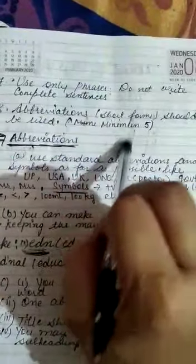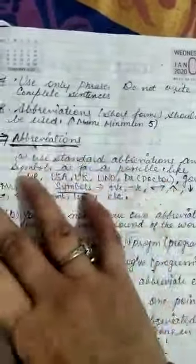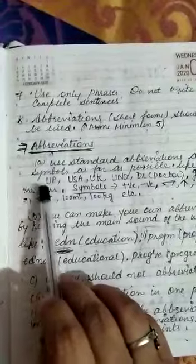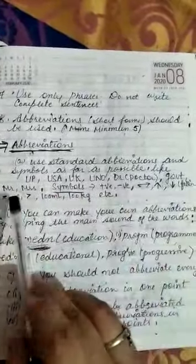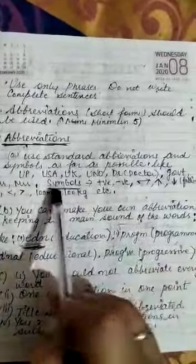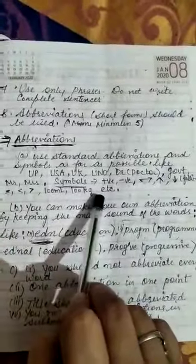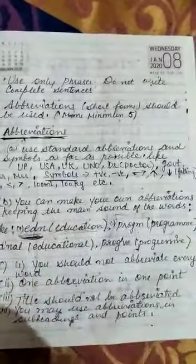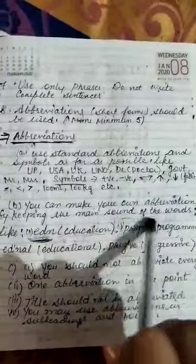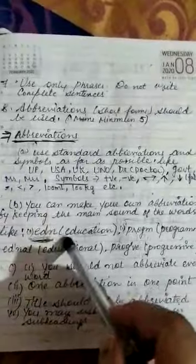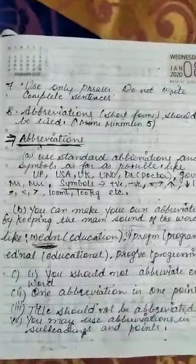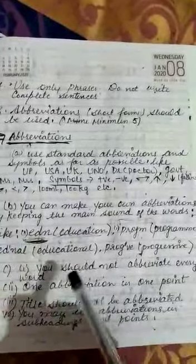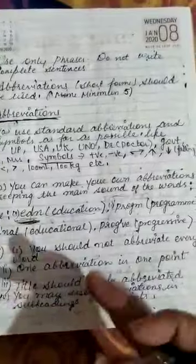Abbreviations should be used — this is very important as it will carry one mark. You will use a minimum of 4 to 5 abbreviations. Standard abbreviations and symbols can be used, like UP, USA, UK, or symbols for positive and negative. You can also make your own abbreviations by keeping the main sound of the words — for example, education becomes EDN. Suffixes and prefixes can be represented in abbreviations. However, you should not abbreviate every word — there is no need to use abbreviations for every word in the passage.